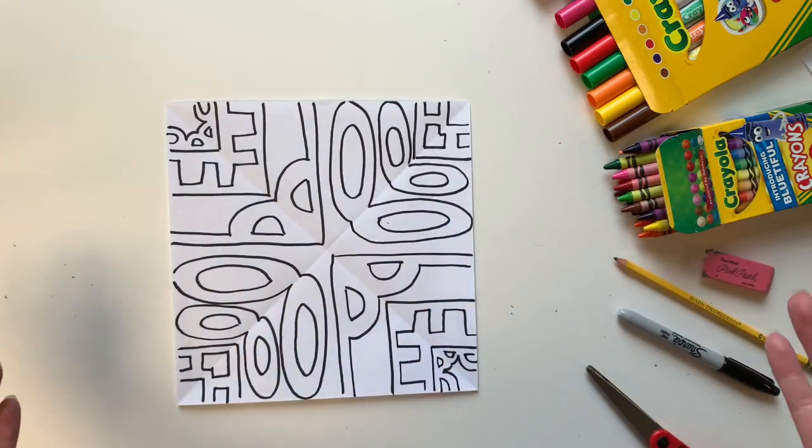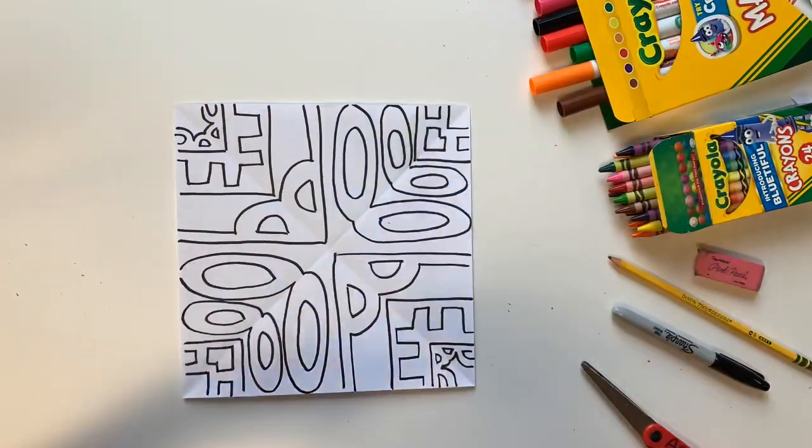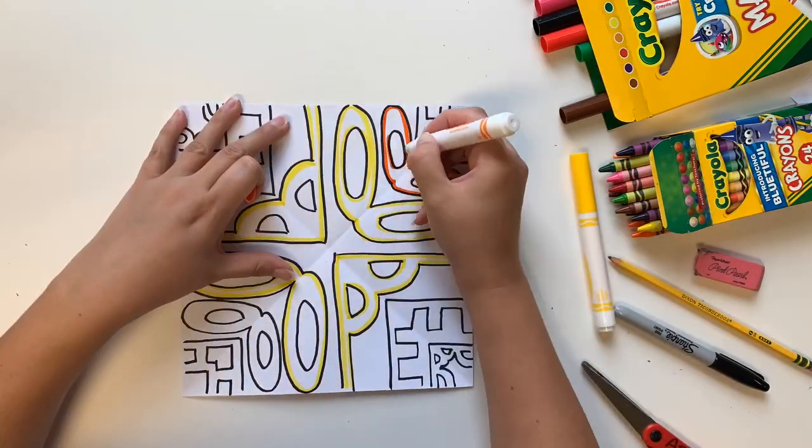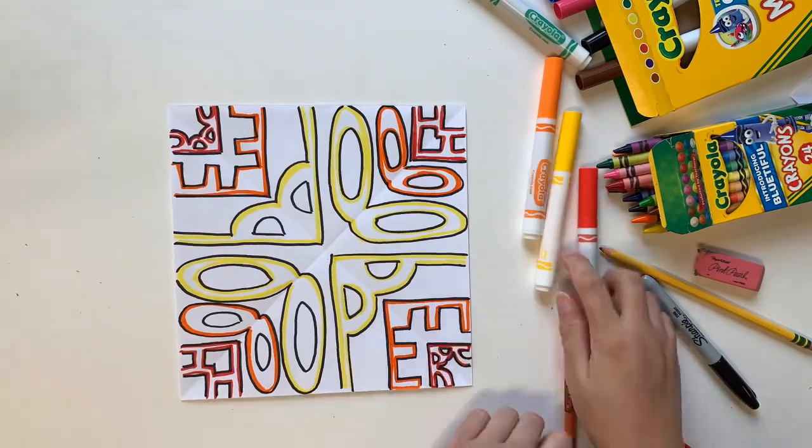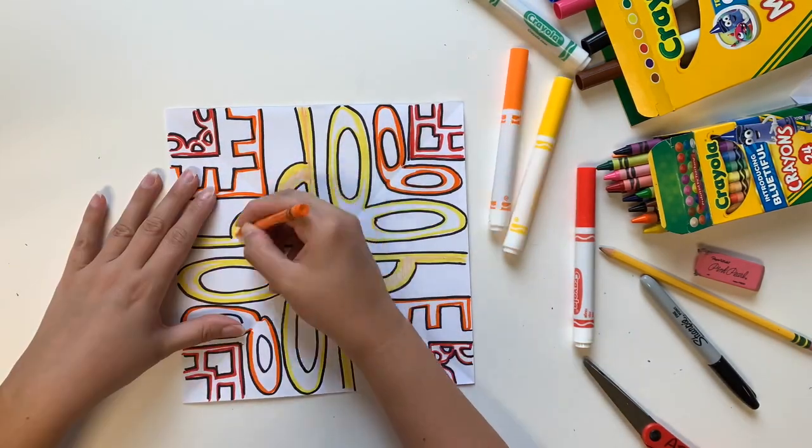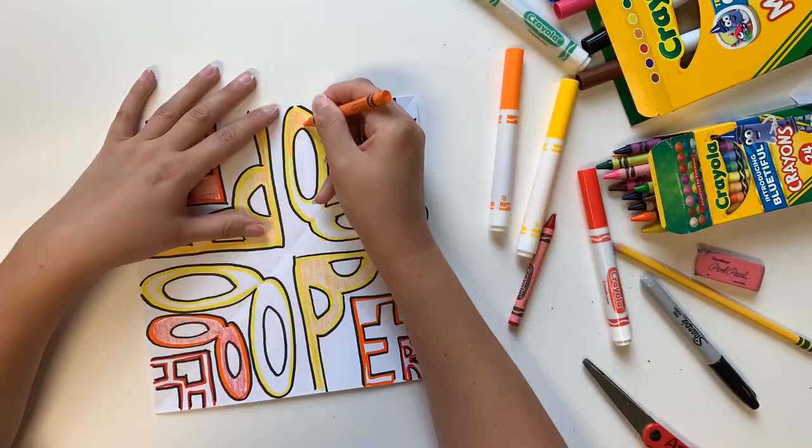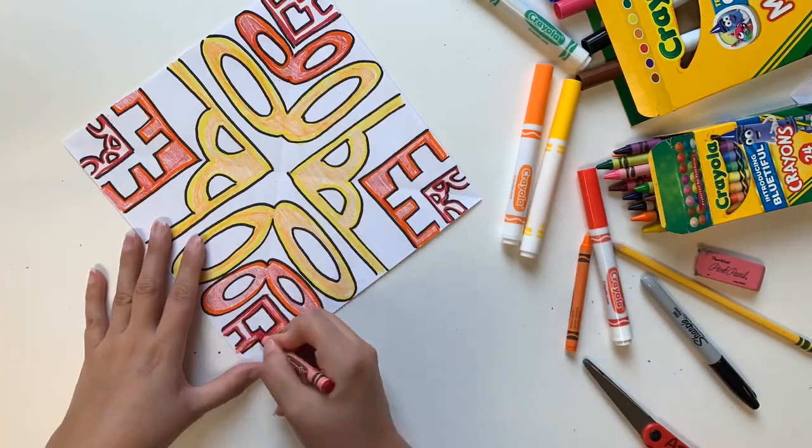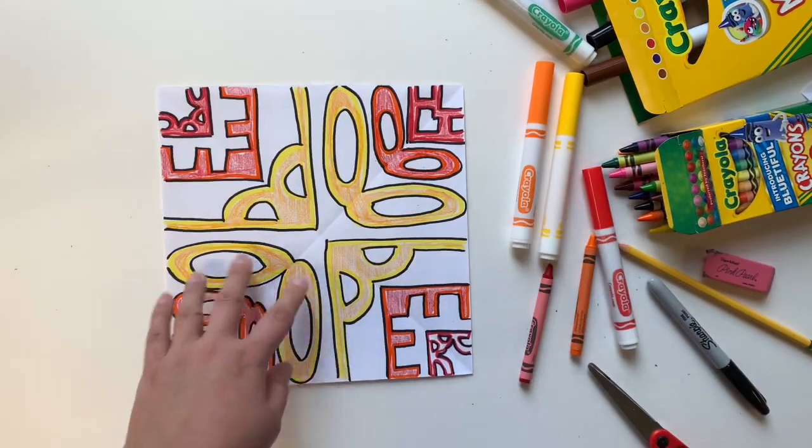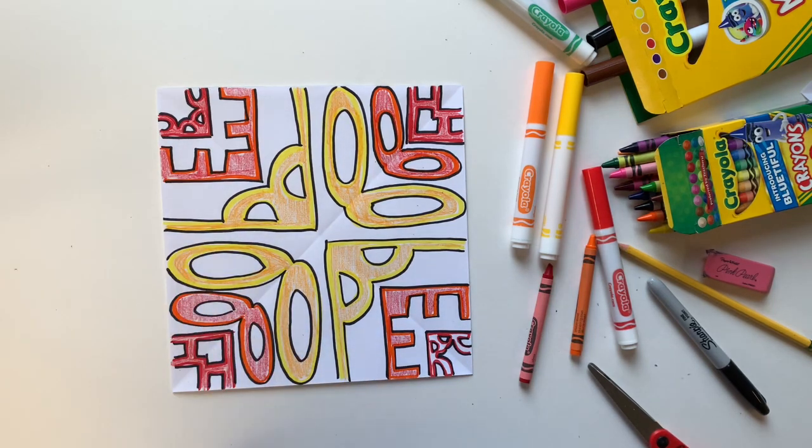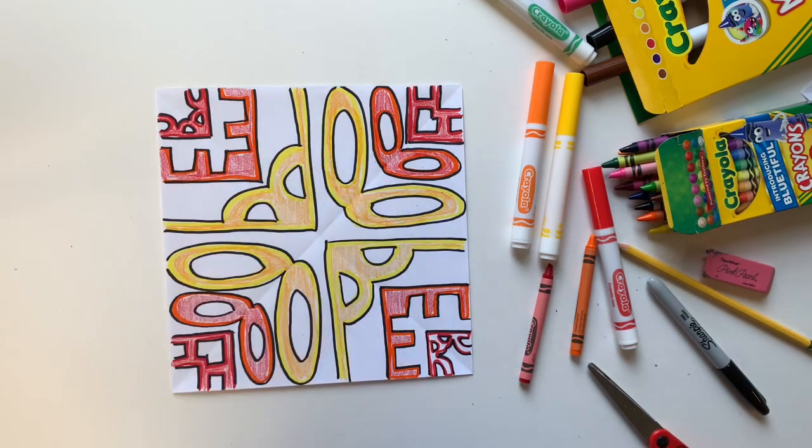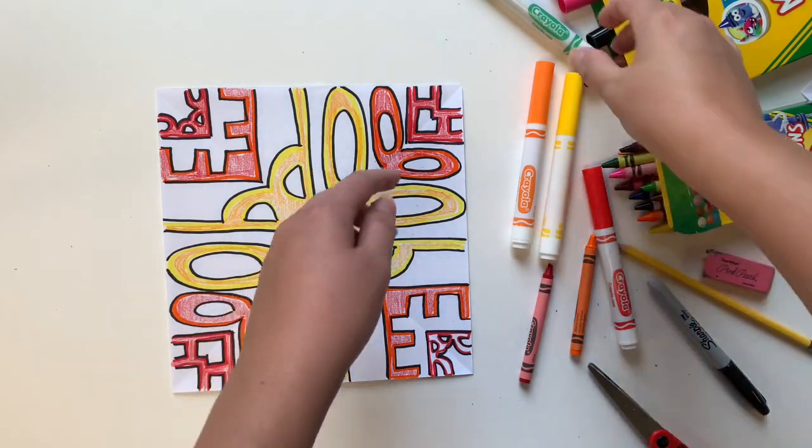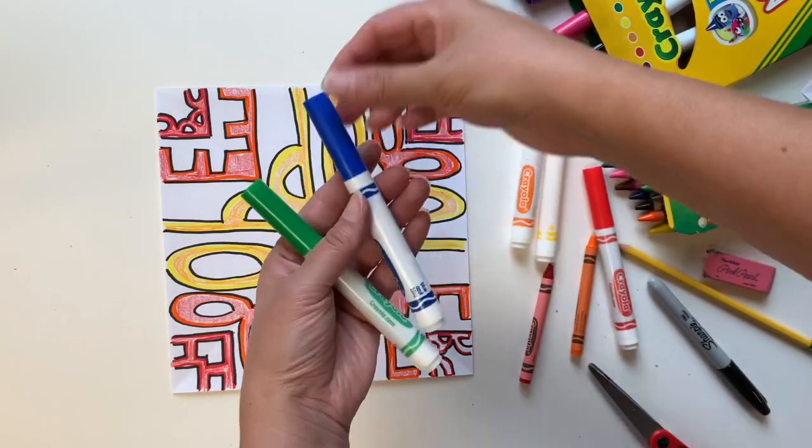The final step is to just color it in. I used markers to outline my letters to get some nice bright bold color and then I switched to crayons to color everything in to give it a nice texture. You could leave it here and just color in the letters if you're running out of time, but if you have a few more minutes you can color in the background. I chose all warm colors to color in my letters so I'm going to use cool colors to do the background. Remember warm colors are red, orange, yellow and cool colors would be green, blue, and purple.